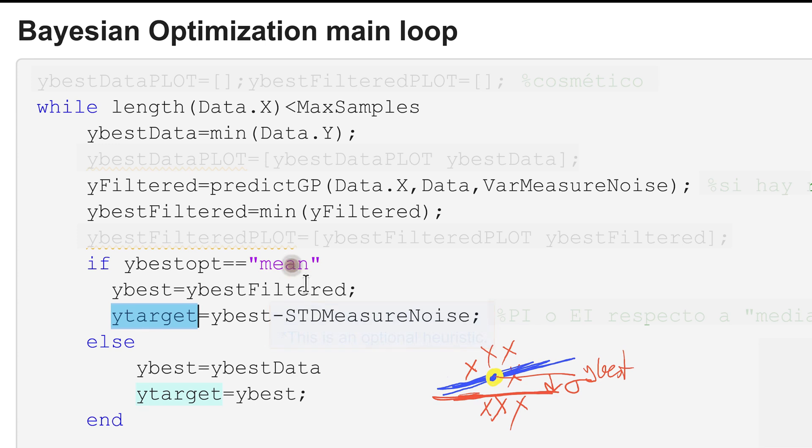When the mean option is selected, the probability of improvement or the expected improvement below this target value, we will look to obtain samples below that value. And if the probability of finding something below that value given my Gaussian process is very low, then maybe I can abort my Bayesian optimization and decide that I have finished.